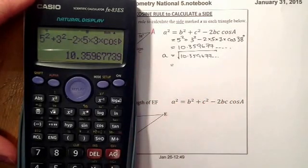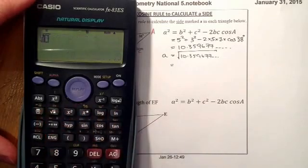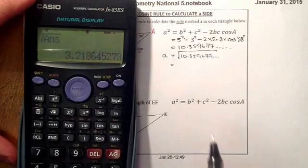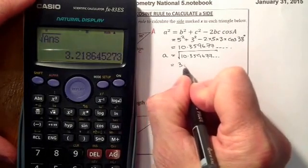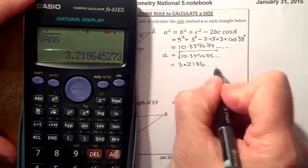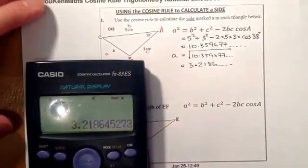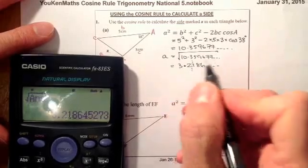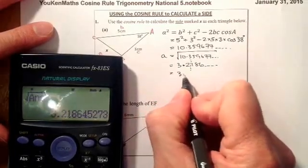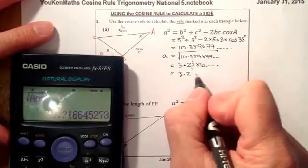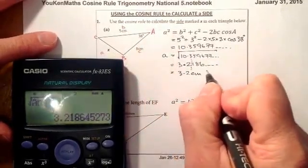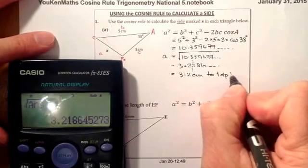From there what we'll go for is just the square root, and what we'll do is we'll just pull in the answer into the square root sign, press equals, and that should give me an answer of 3.2186. And I'm rounding that one, I'll round it to one decimal place. And if I round that, take it to there, so it's going to give me 3.2, and that's going to be in centimetres.